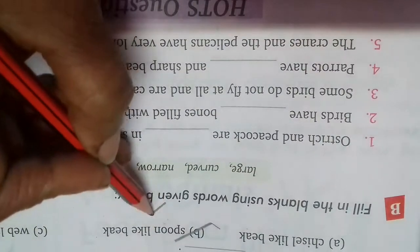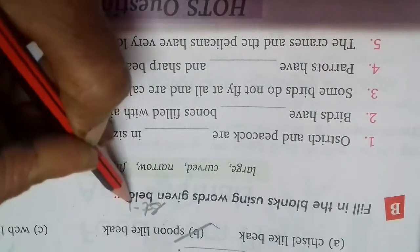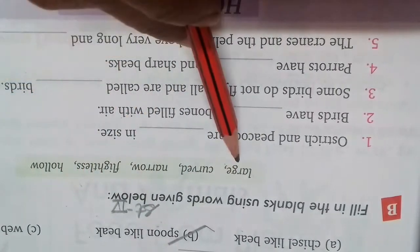Then in the same date we do stage four: fill in the blanks using words given below. The words are large, curved, narrow, flightless, hollow.